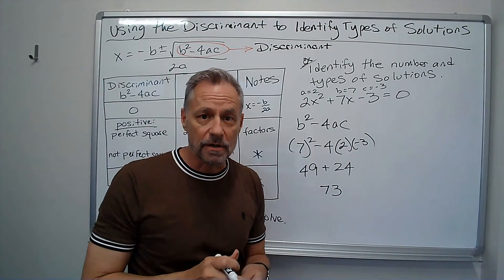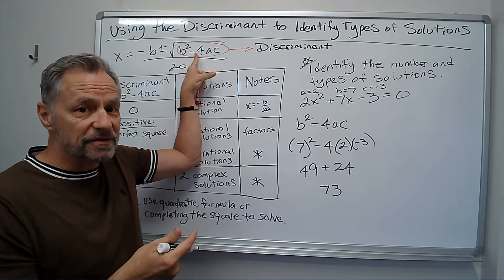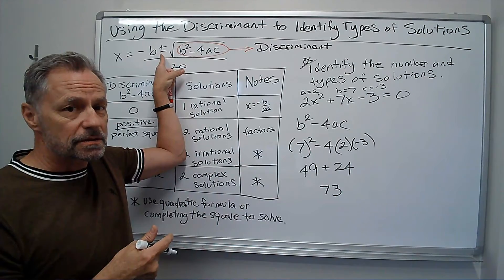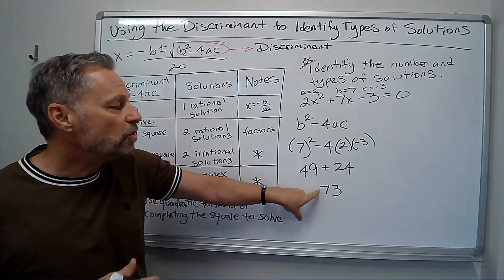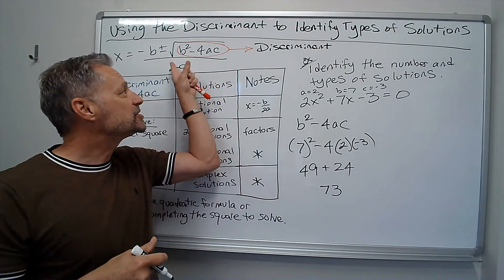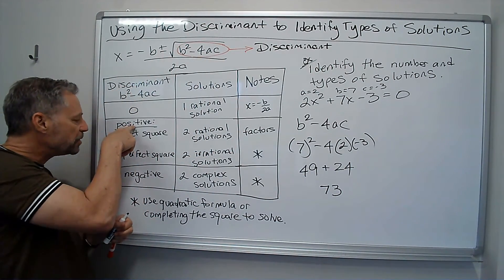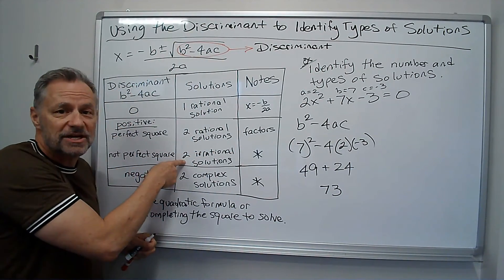So now I'm going to my chart. What does that mean if I get a 73 on there? Well, it's positive, so I'm going to get two answers. I don't know if the square root of 73... it's not a perfect square. So I'm going to get two answers, but they're both irrational. It fits in right here. The discriminant is positive, not a perfect square. Two irrational solutions.